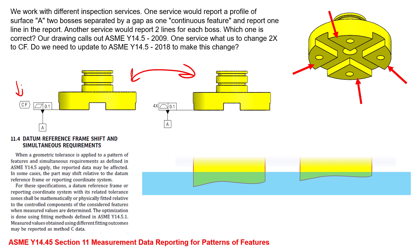One way to get around this if you are using a pre-2009 standard is to utilize a four-times profile of a surface to the same value we saw with flatness. Since we have a four-times in front of the feature control frame — in other words controlling these four surfaces together — we create what's called simultaneous requirements, because it's a pattern of features. ASME Y14.45 tells us in section 11.4 that when a geometric tolerance is applied to a pattern of features and simultaneous requirements is defined in ASME Y14.5, the report data may be affected. It then goes on to describe a method of inspecting this.